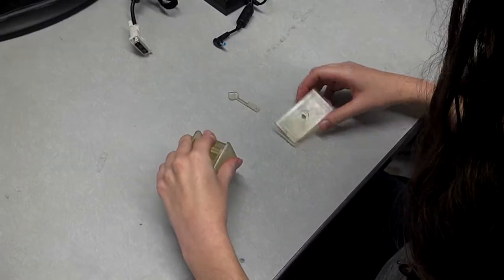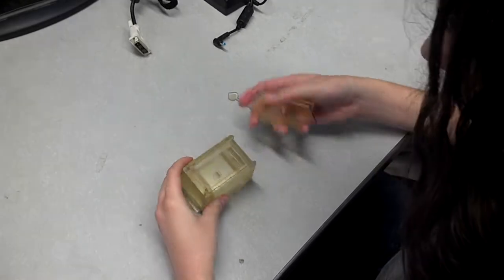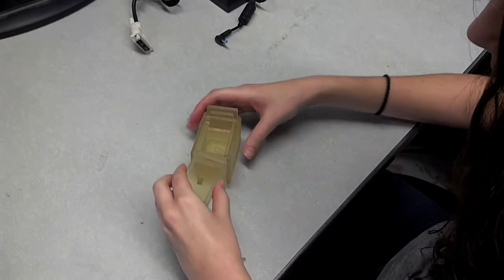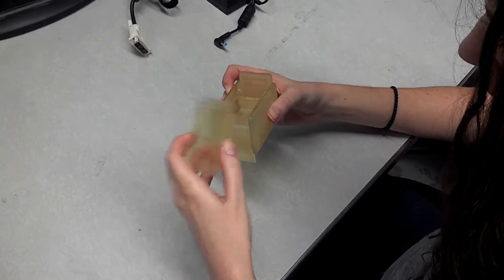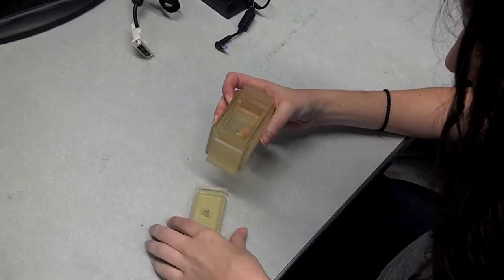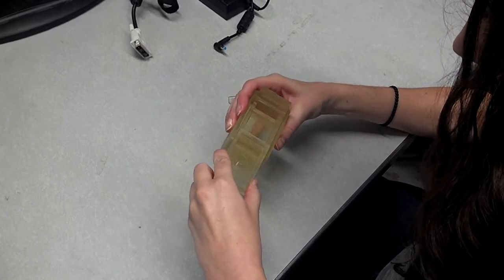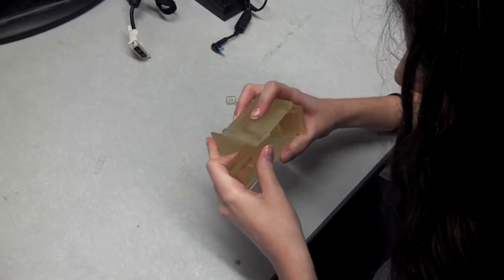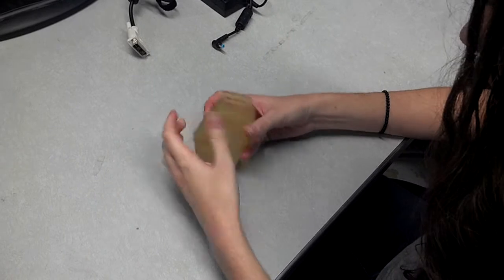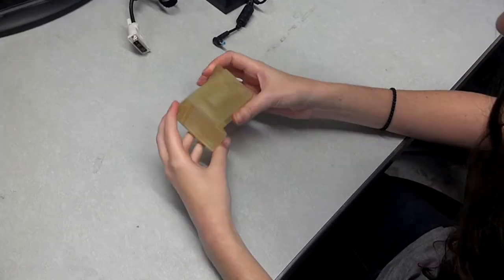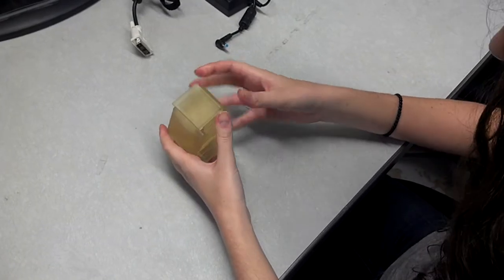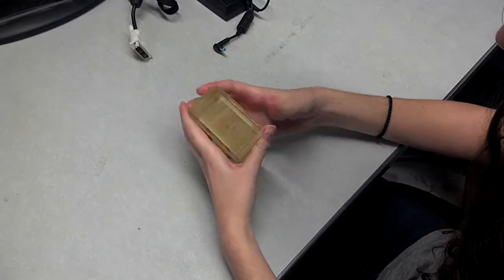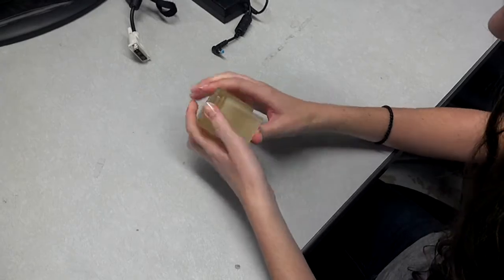And then the same thing with the top. Close. And then now all the pieces are kind of in the box, but it still takes a few steps to get it to close all the way. So you just start sliding the pieces one by one.